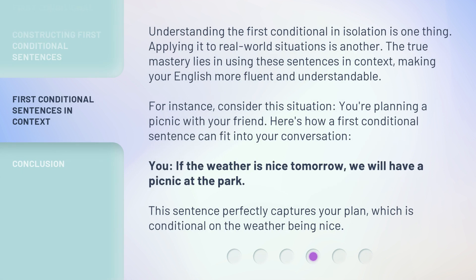Understanding the First Conditional in isolation is one thing. Applying it to real-world situations is another. The true mastery lies in using these sentences in context, making your English more fluent and understandable. For instance, consider this situation: you're planning a picnic with your friend. Here's how a First Conditional sentence can fit into your conversation — 'If the weather is nice tomorrow, we will have a picnic at the park.' This sentence perfectly captures your plan, which is conditional on the weather being nice.